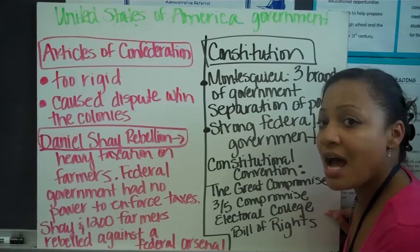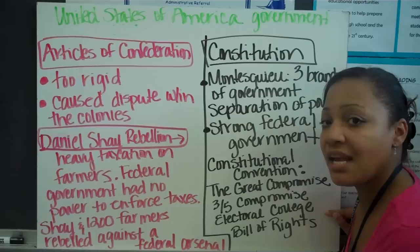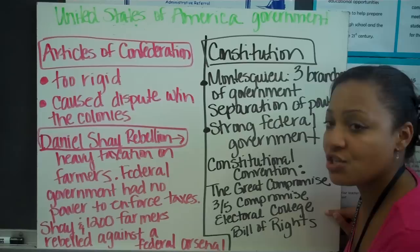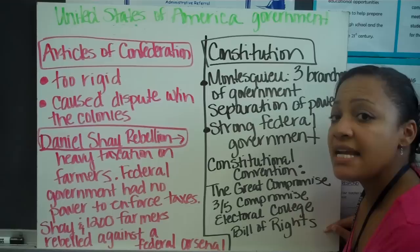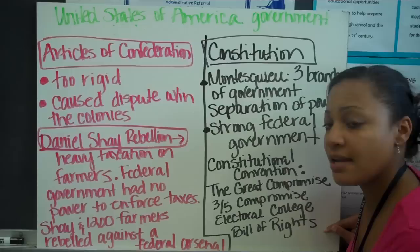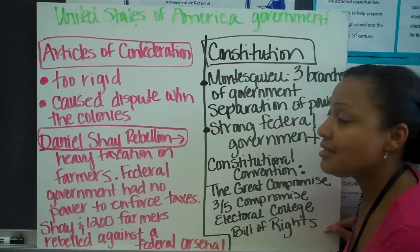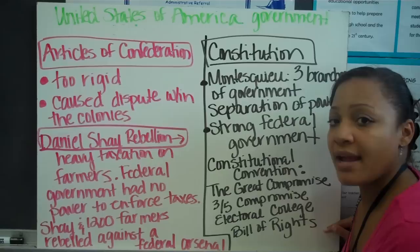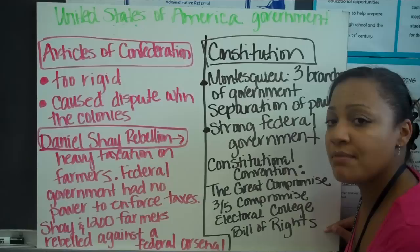Another compromise is the Electoral College, which determines how we elect our president. We do not directly elect our president — we elect electors who go to vote on behalf of our district. The president must get at least 270 electors to win. We'll discuss this in greater detail in U.S. History next year. The last and biggest compromise: some colonists still feared a strong federal government and wanted powers to remain in the states, fearing another dictator or absolute monarch. So in order for them to sign off, they required a Bill of Rights to be added — needing 9 out of 13 states to ratify the Constitution.